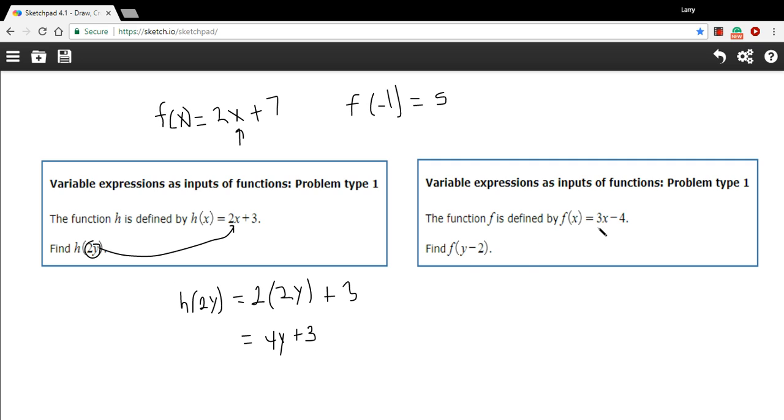Let's try another one. Here we have the function f of x is 3x minus 4. And we want to find f of y minus 2. Well, in that case, we just put y minus 2 in the function in place of x.